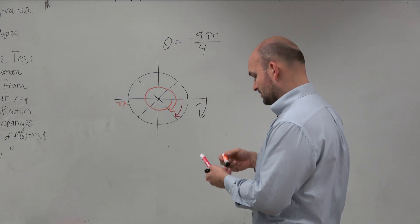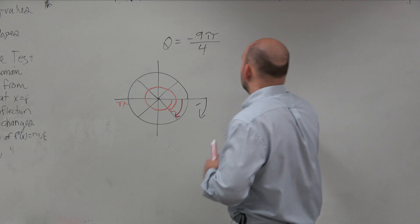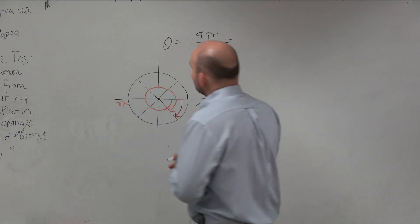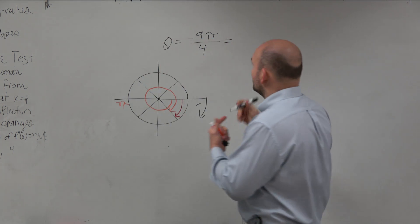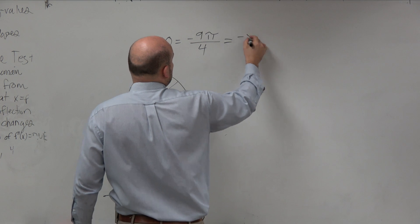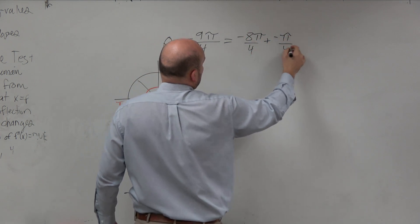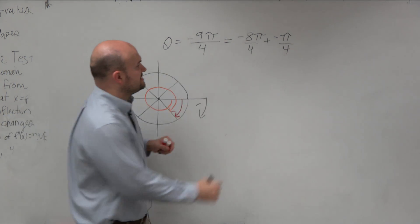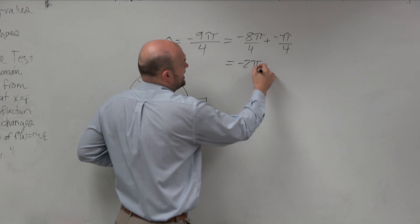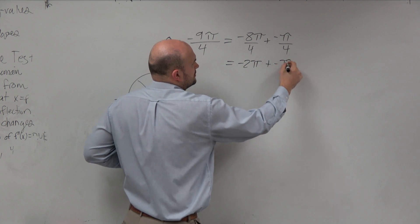Now, obviously, we can figure out the reference angle from that period rather easily. But I also want you guys to understand that you can write this what we call in terms of a period as an aid. We can say this is negative 8 pi over 4 plus negative pi over 4. And the reason being is because this is just equivalent to negative 2 pi, right?